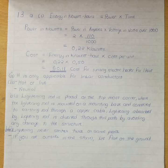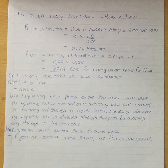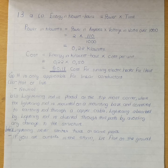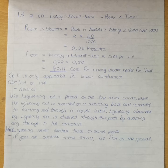For part 2, the limitation of Ohm's Law is that it is only applicable for linear conductors. For part 3, the two cables in a two-pin plug are the hot (live) and neutral cables. For B part 1, the lightning rod is placed at the topmost corner, mounted on a base, and connected to an earthing rod through a copper cable so lightning is diverted away from the structure.